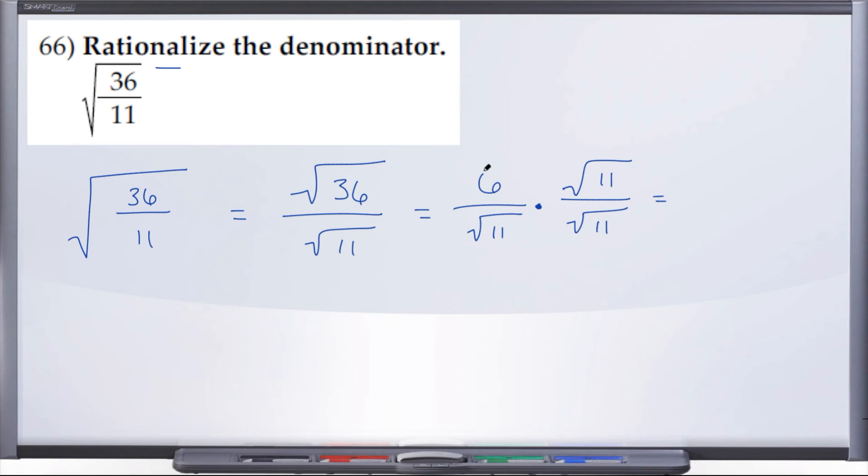Remember when you multiply fractions, you just go straight across, numerator to numerator, denominator to denominator. So we have 6 times radical 11 is just 6 radical 11, over radical 11 times radical 11.